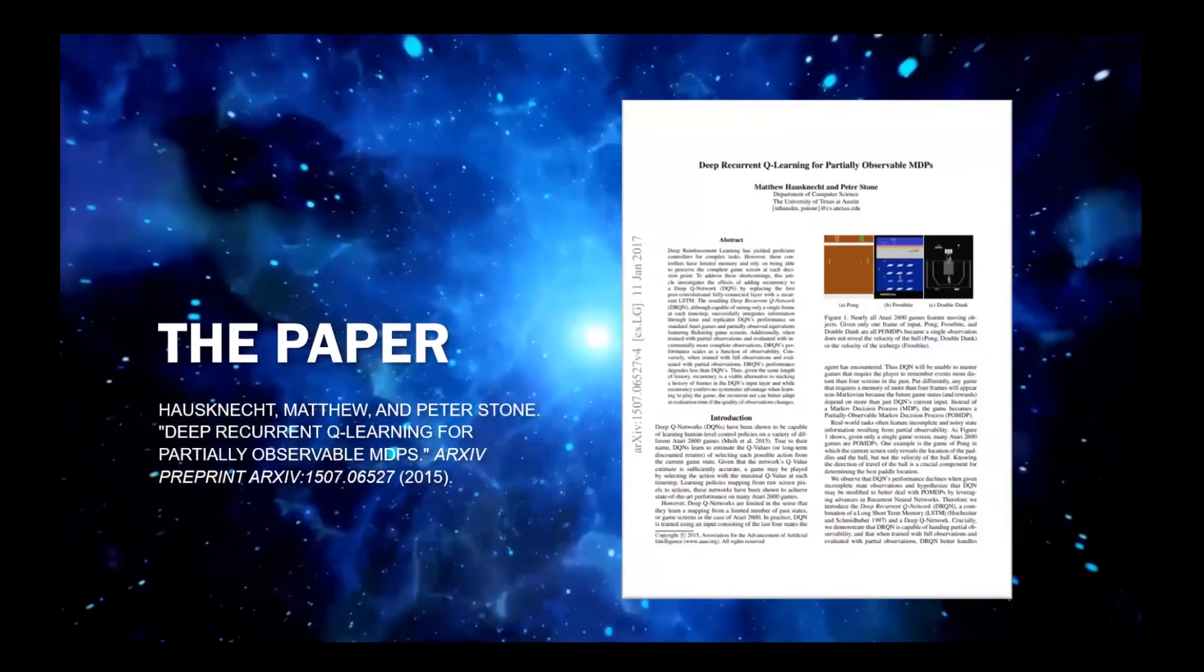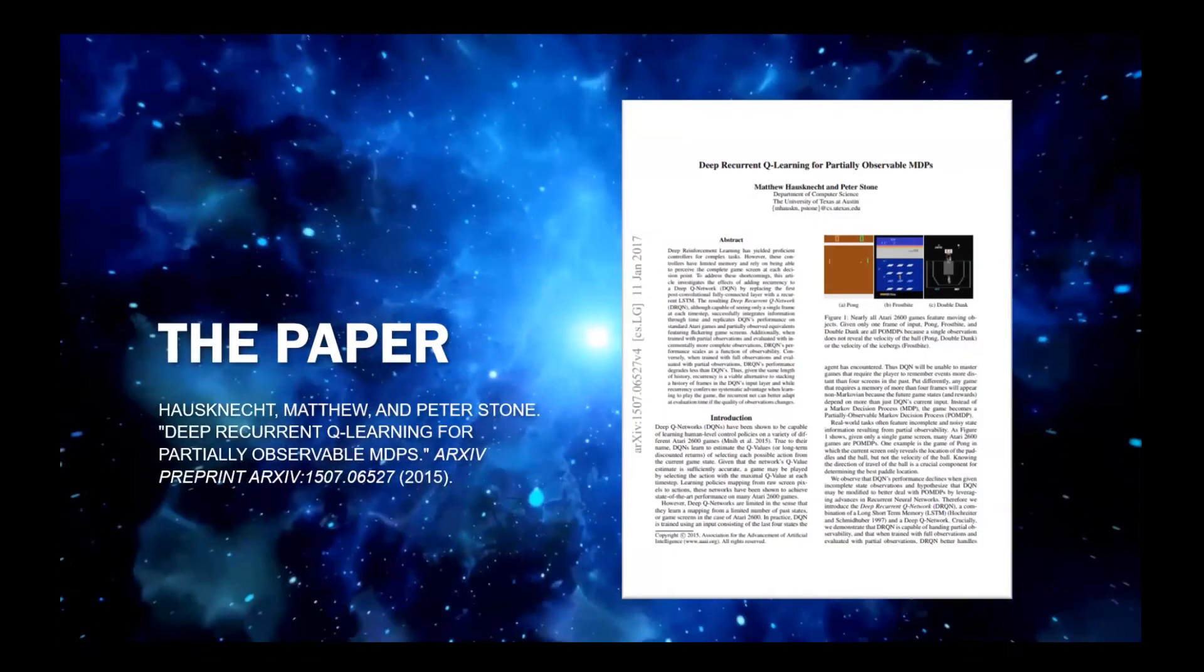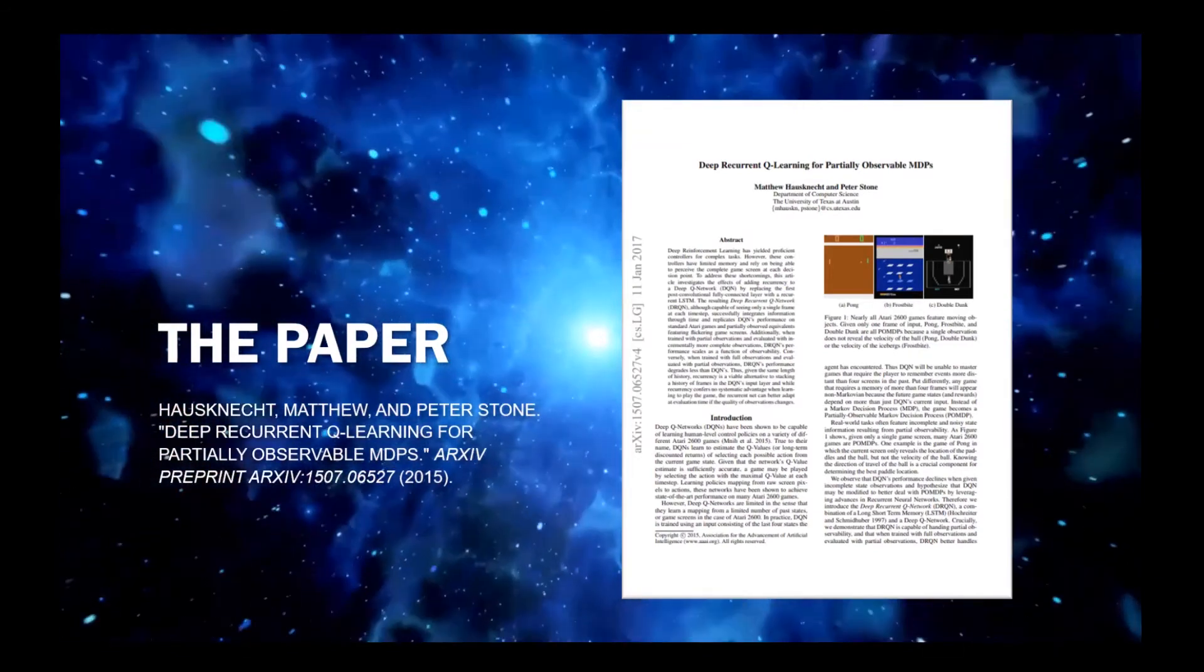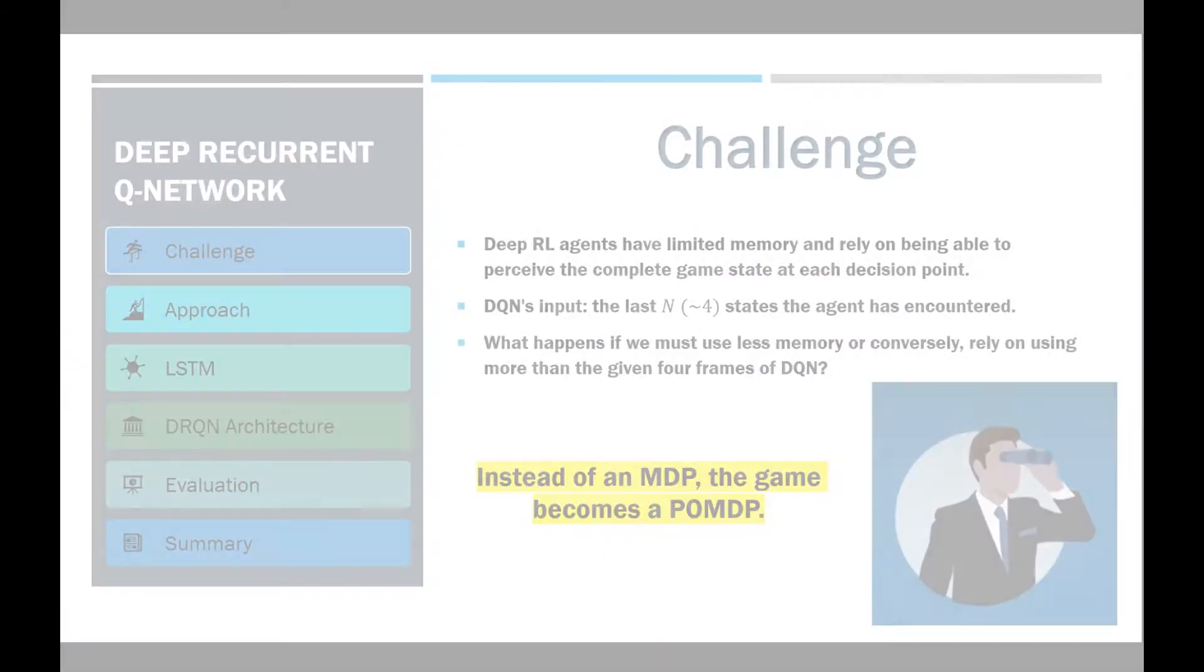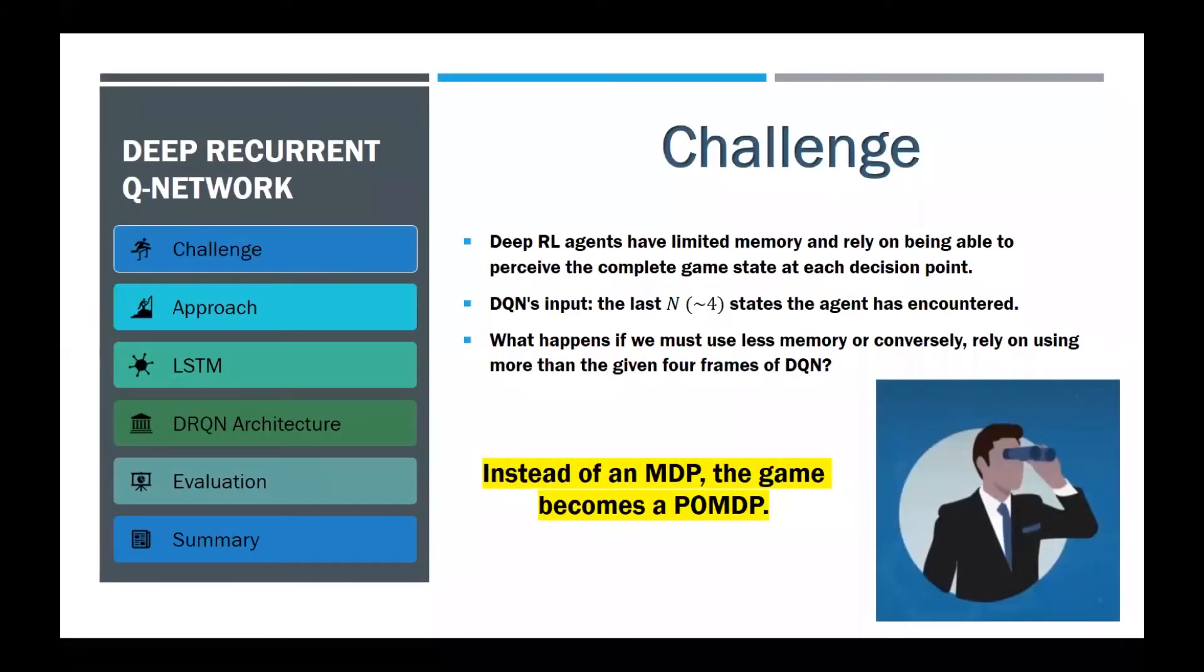So, we are done with the introduction. Let's talk about the amazing paper by Matthew Hausknecht and Peter Stone from the University of Texas at Austin. Deep reinforcement learning has already yielded proficient controllers for complex tasks. However, these controllers have limited memory and rely on being able to perceive the complete game scheme at each decision point.